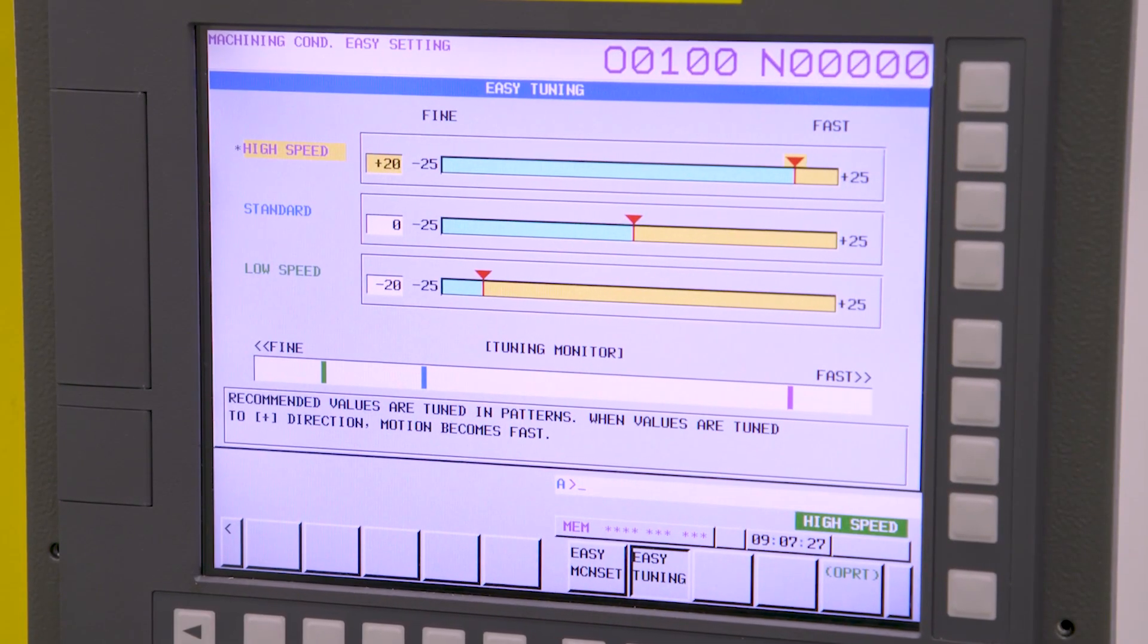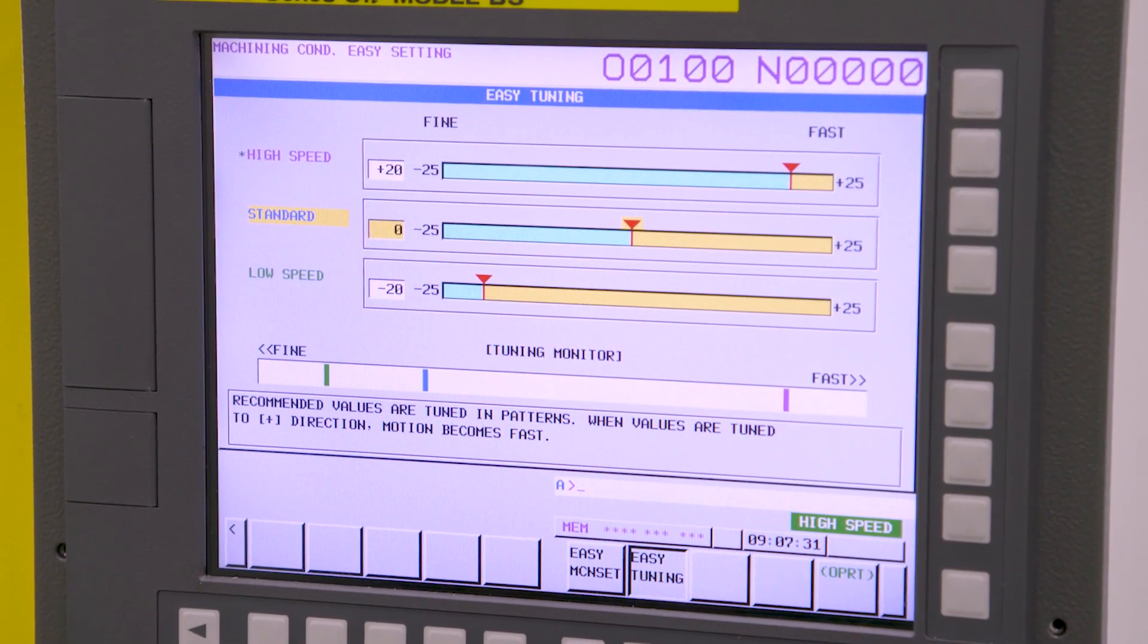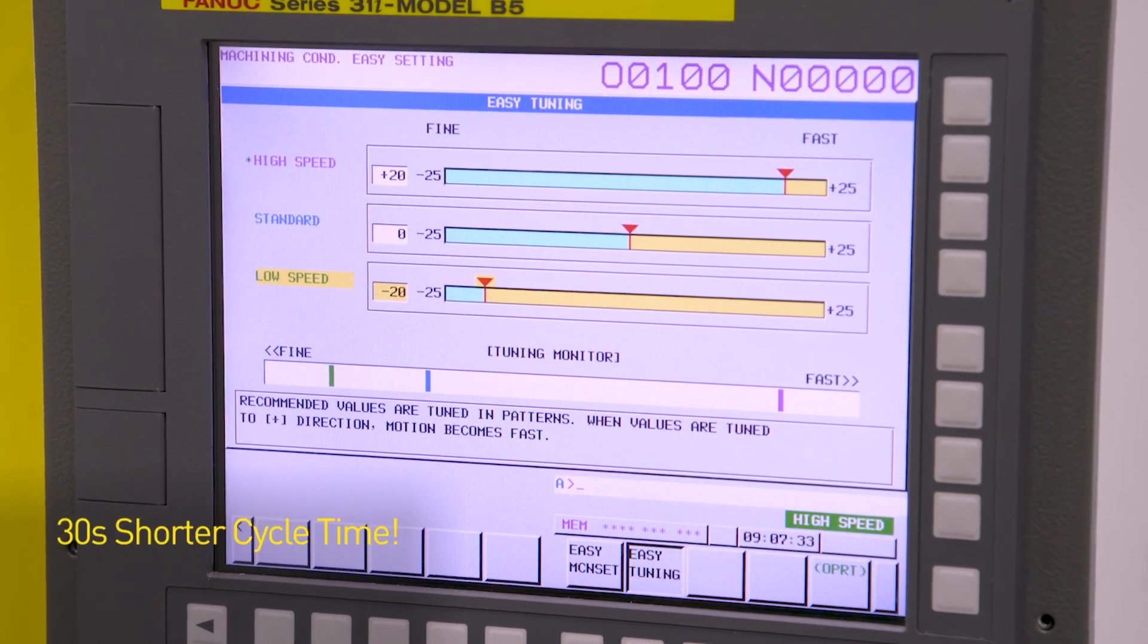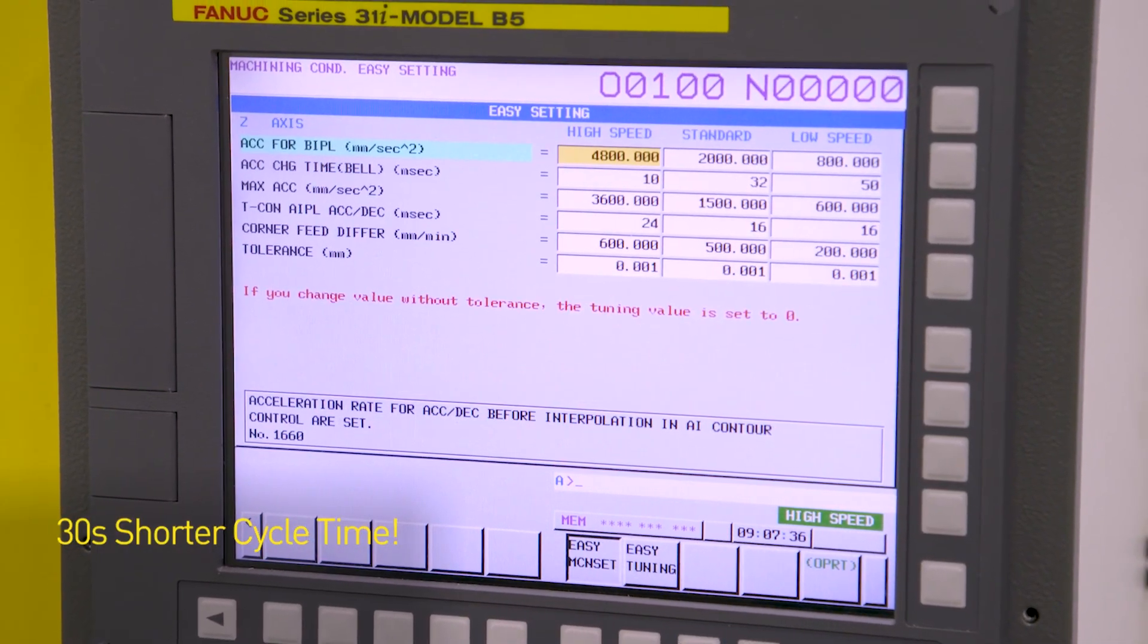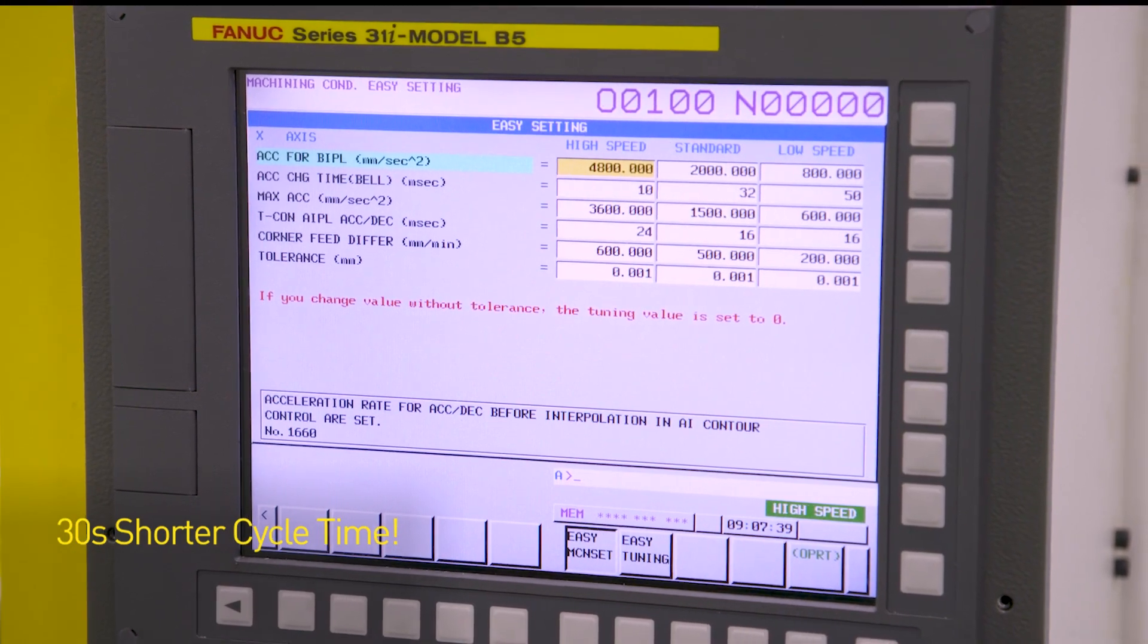Just by enabling the fast cycle time features, the sample process resulted in a 30-second reduction in cycle time with no servo tuning required and no accuracy reduction in our sample part.